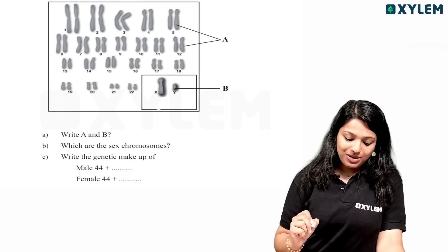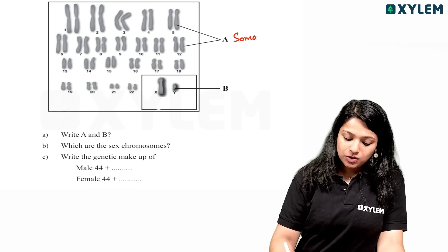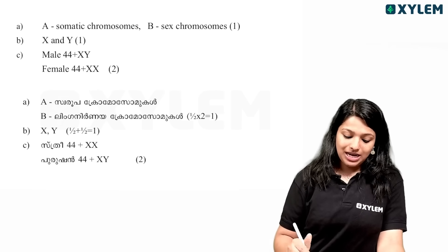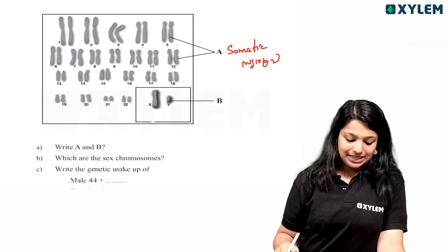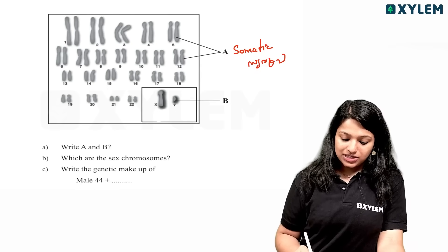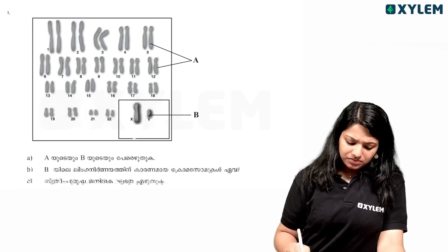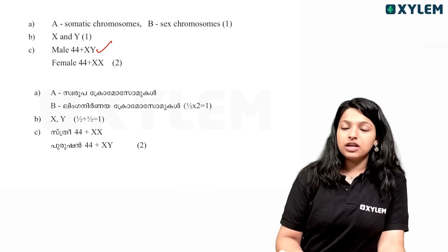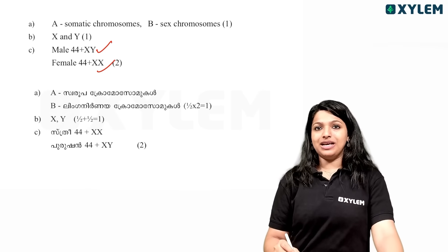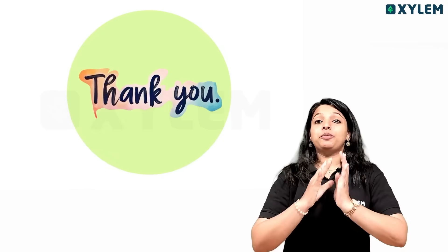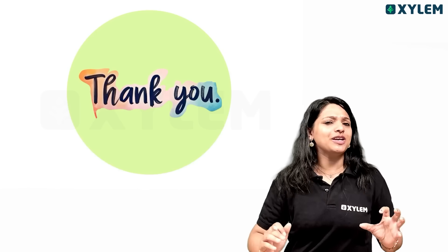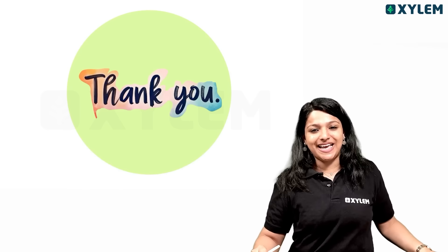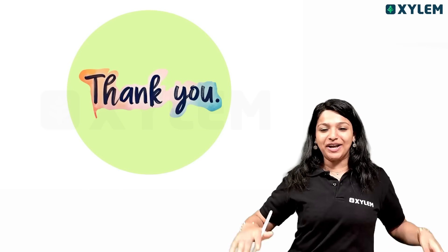Last question. A and B. A, we call them somatic chromosomes. B shows sex chromosomes. See you in the next video. Bye bye.